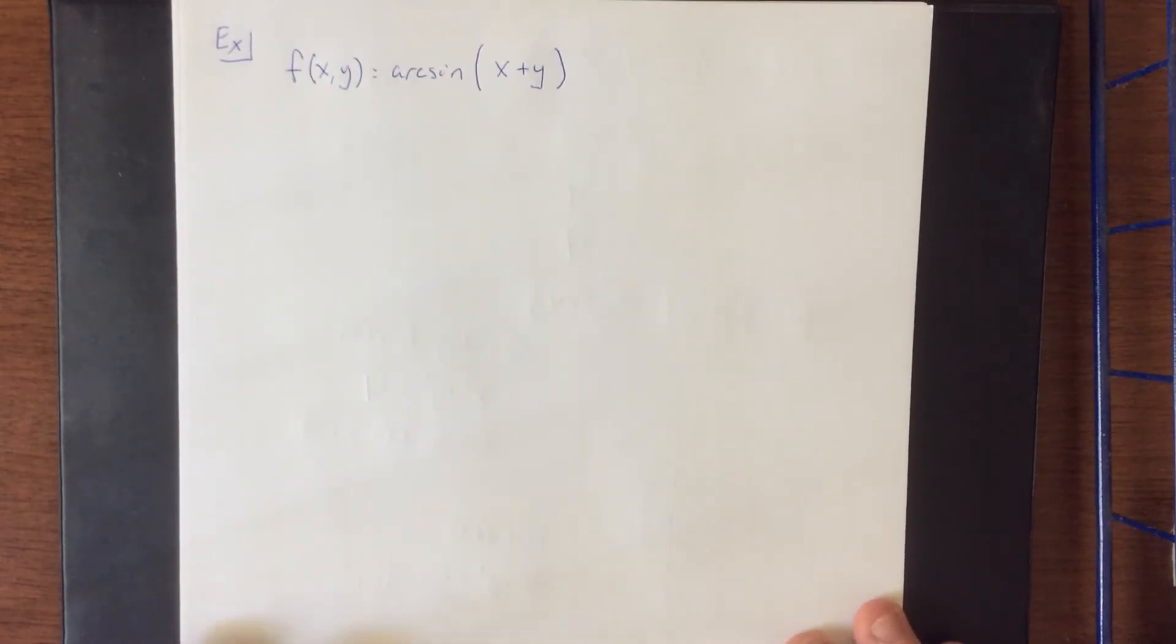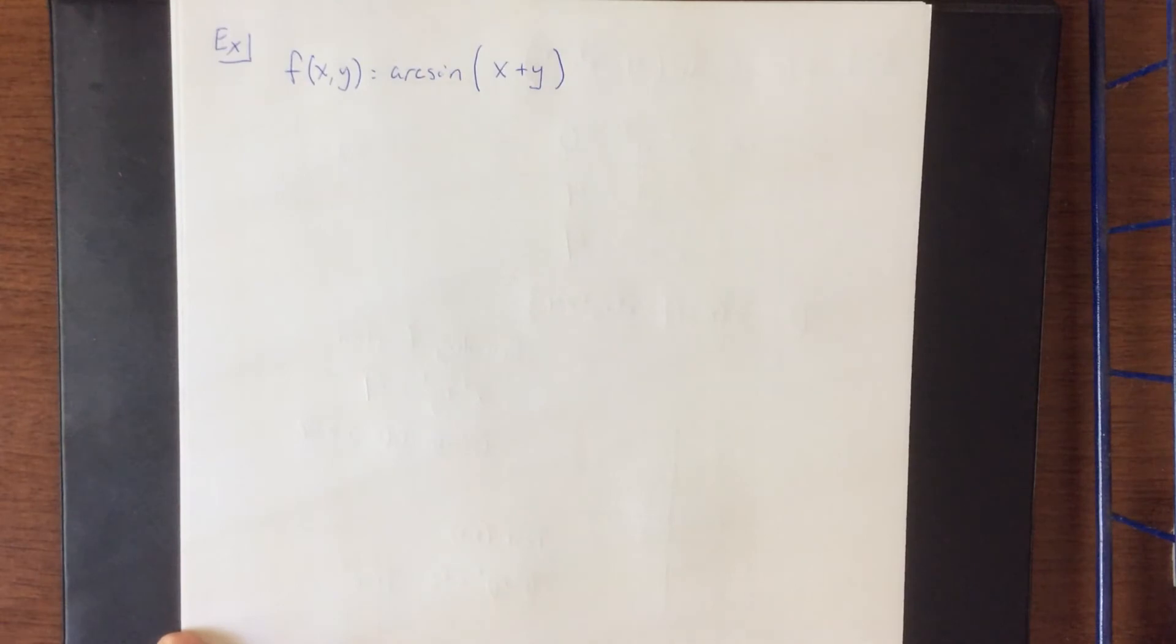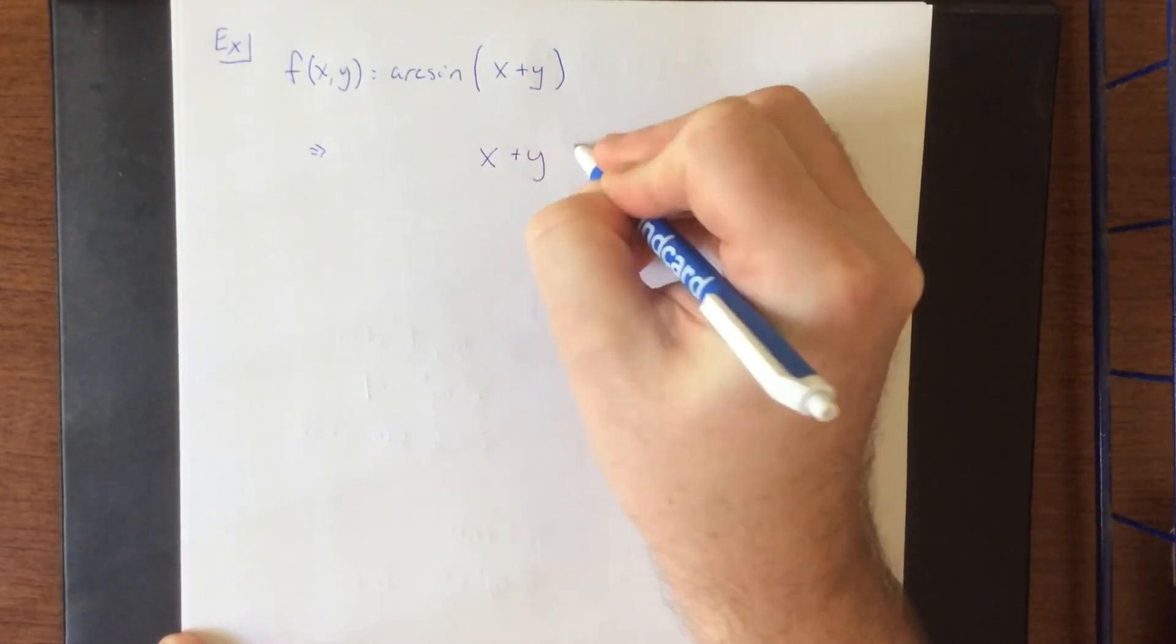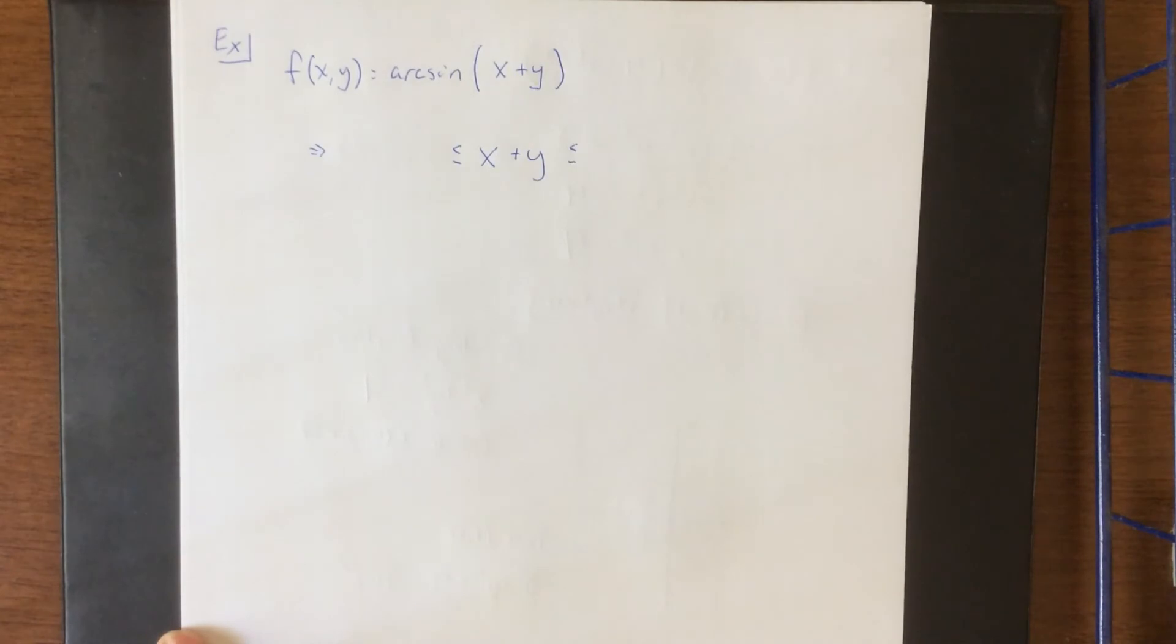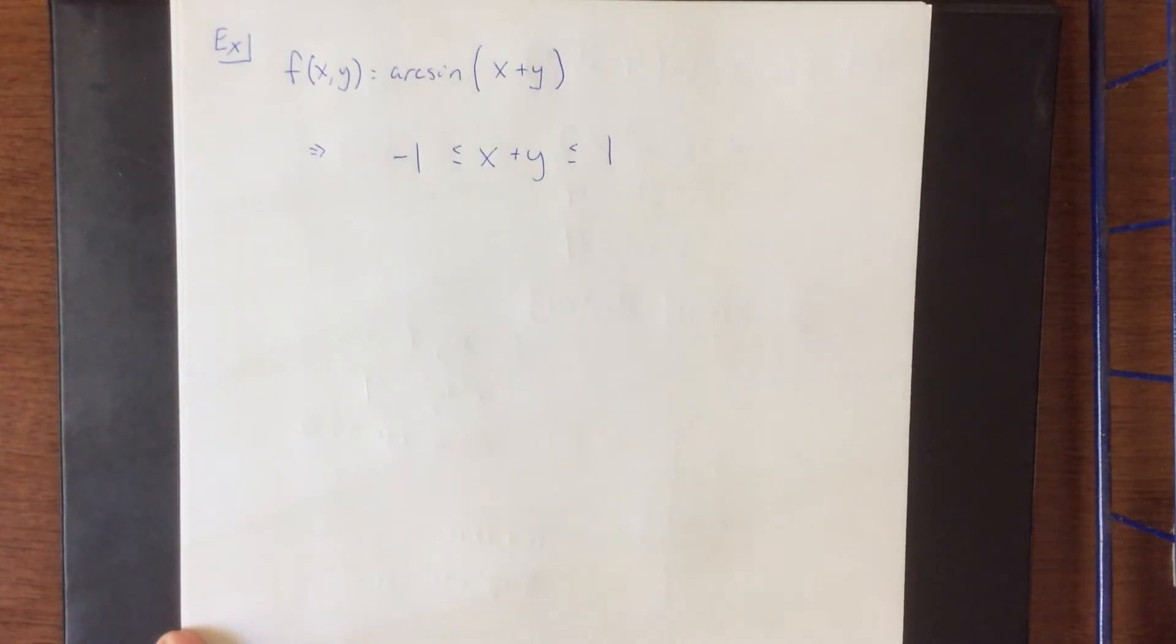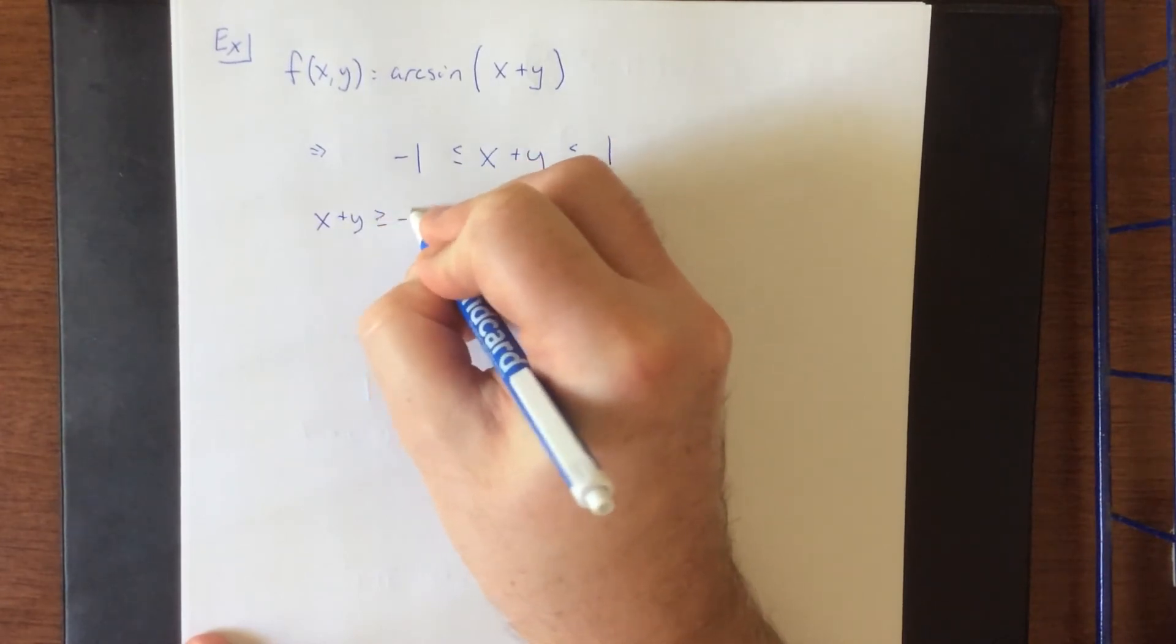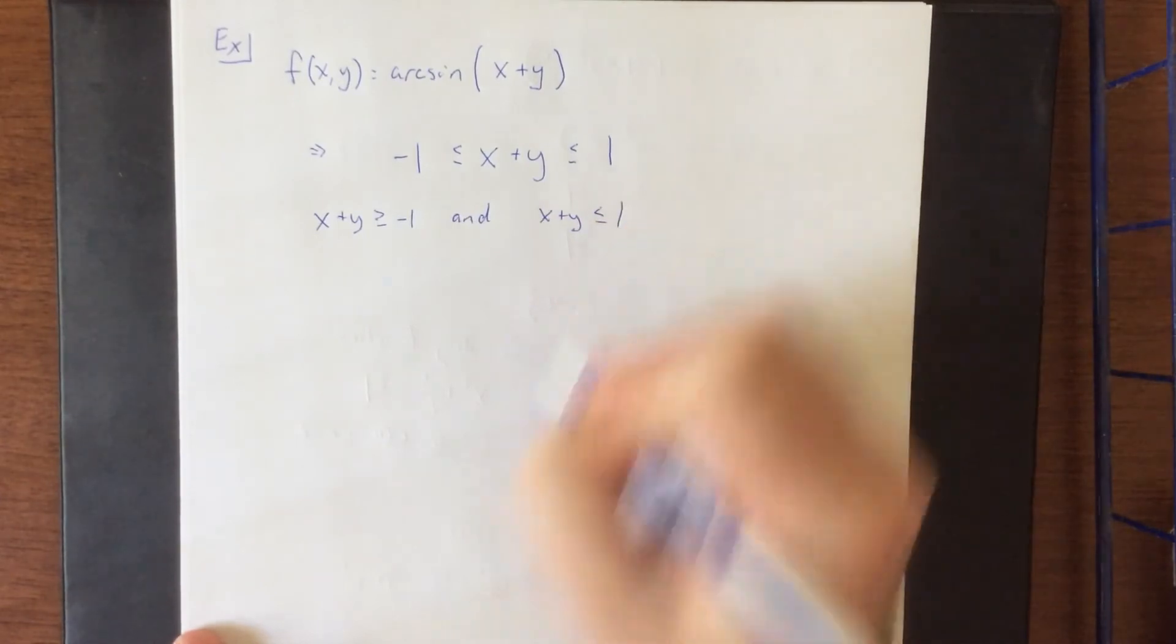I wanted to try out one more because I mentioned that I would bring this up. That is f(x,y) is equal to the arcsine of (x + y). So the rule for the arcsine function is that whatever you have as the input to an arcsine function needs to be within the range of the sine function. The range of the sine function goes from -1 up to positive 1. We can really break this down into two inequalities. What we're seeing is that x + y is greater than or equal to -1 and x + y is less than or equal to 1.